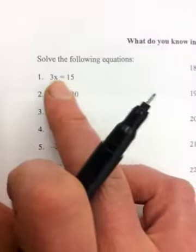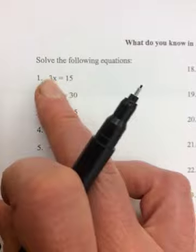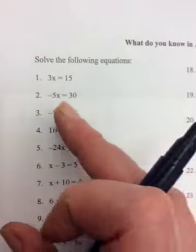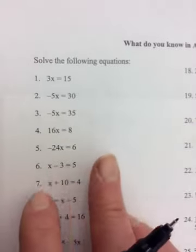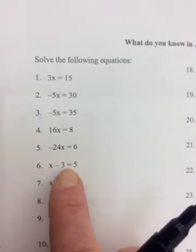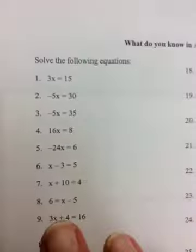Okay, so hopefully in number one, hopefully it wasn't too difficult. You want to get x by itself, so divide both sides by three. Down here, in number six, you want to get x by itself, so take the negative three over where it becomes positive.